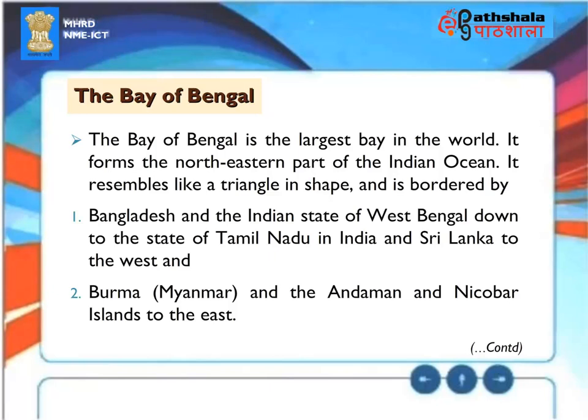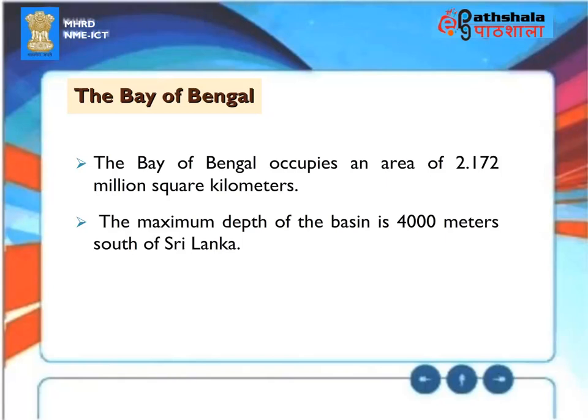The Bay of Bengal. The Bay of Bengal is the largest bay in the world. It forms the northeastern part of the Indian Ocean. It resembles like a triangle in shape and is bordered by Bangladesh and the Indian state of West Bengal down to the state of Tamil Nadu in India and Sri Lanka to the west, and Burma or Myanmar and the Andaman and Nicobar Islands to the east. The Bay of Bengal occupies an area of 2.172 million square kilometers. The maximum depth of the basin is 4,000 meters south of Sri Lanka.